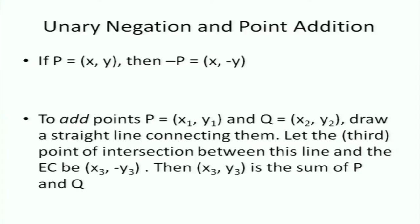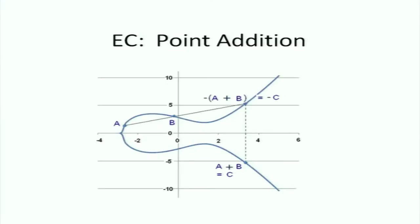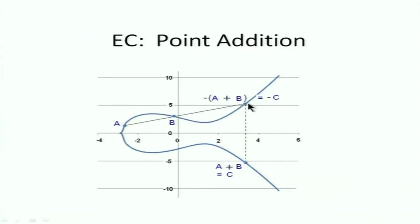To add two points on the elliptic curve, let's see how that is done geometrically. I want to add points A and B. The pictorial representation is: connect A and B and extend that line — it is guaranteed to hit a third point under most conditions. It hits the elliptic curve at a third point, and then you take the mirror image across the x-axis, and that is the sum of A and B. So C = A + B, and −C is the mirror image.